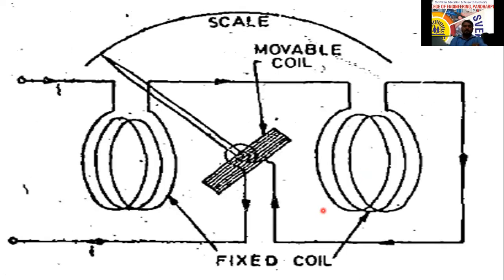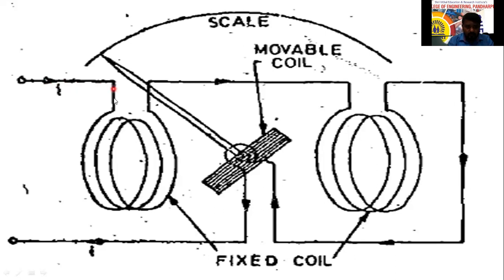For the working principle: supply is given to the fixed coil and current starts to flow. In each half of the fixed coil the current flows, producing an electromagnetic magnetic field between the two coils. The same current then flows to the moving coil as well.